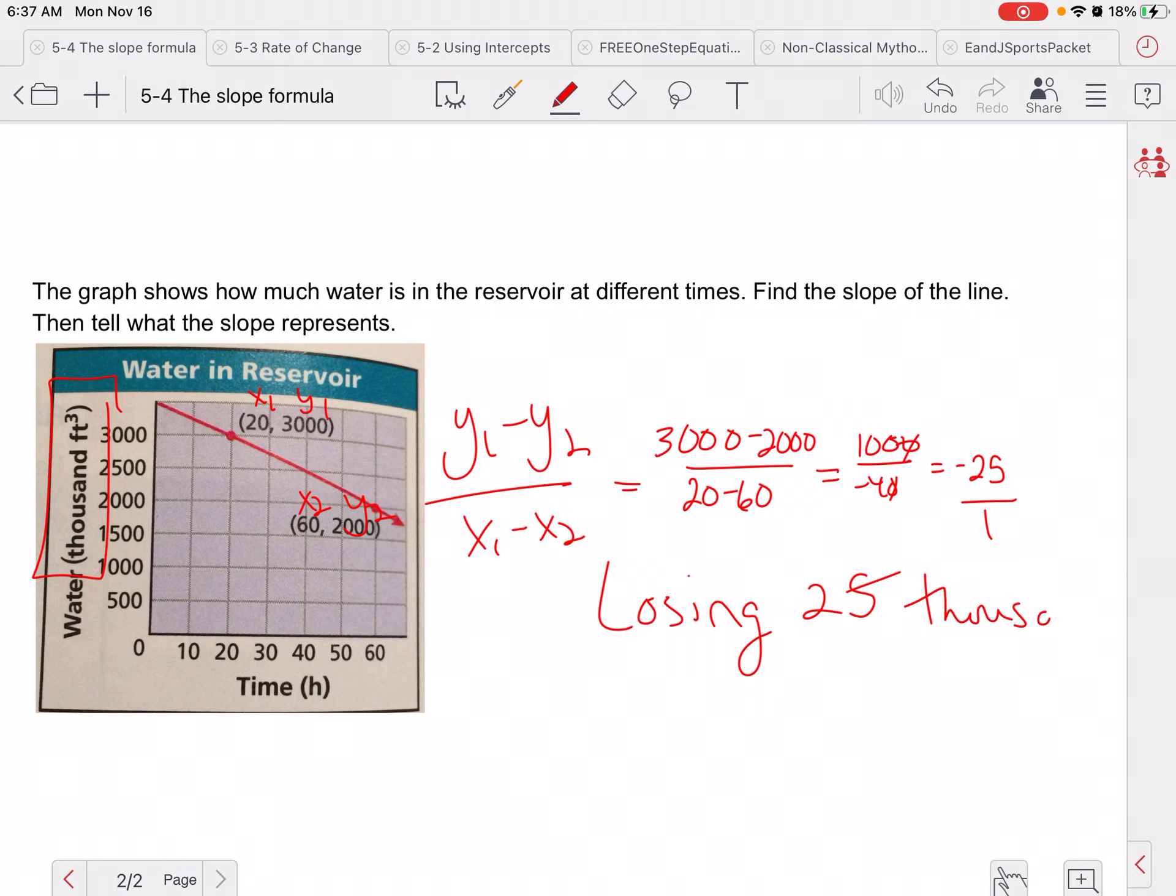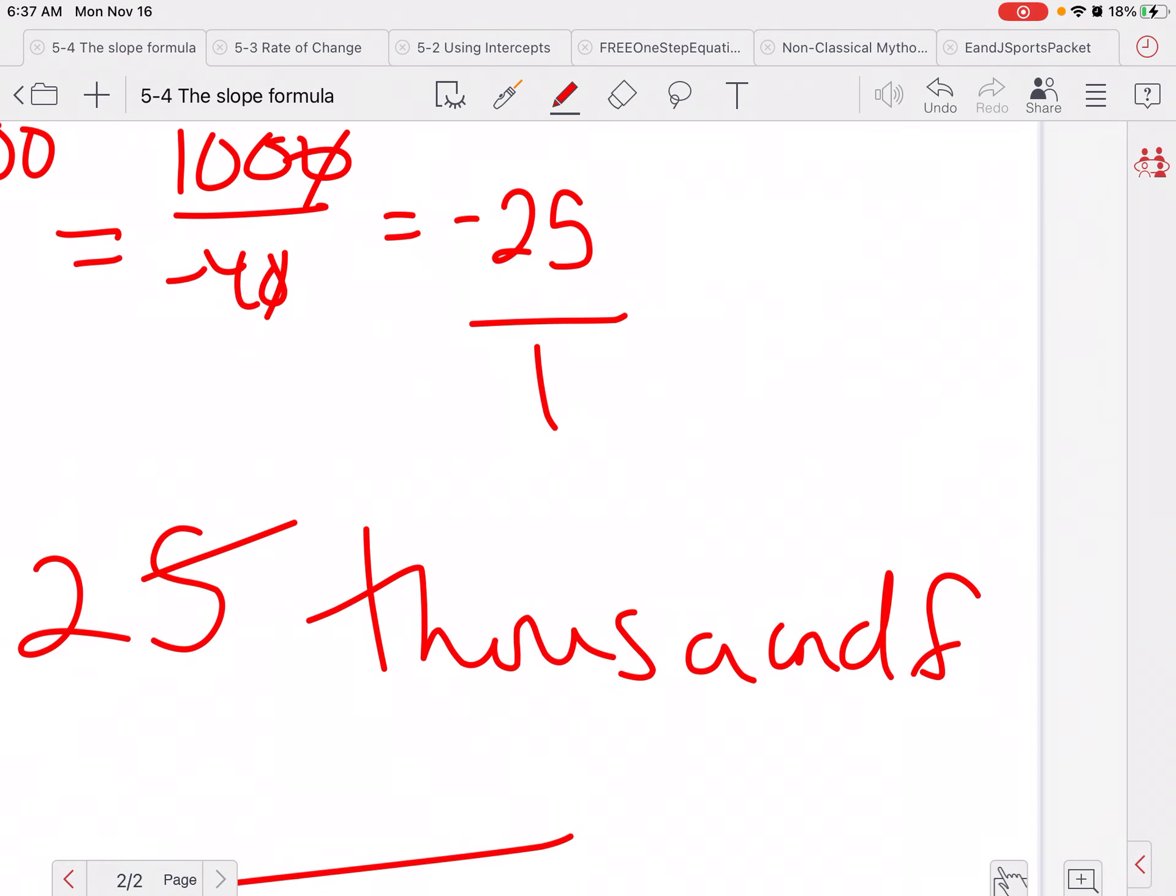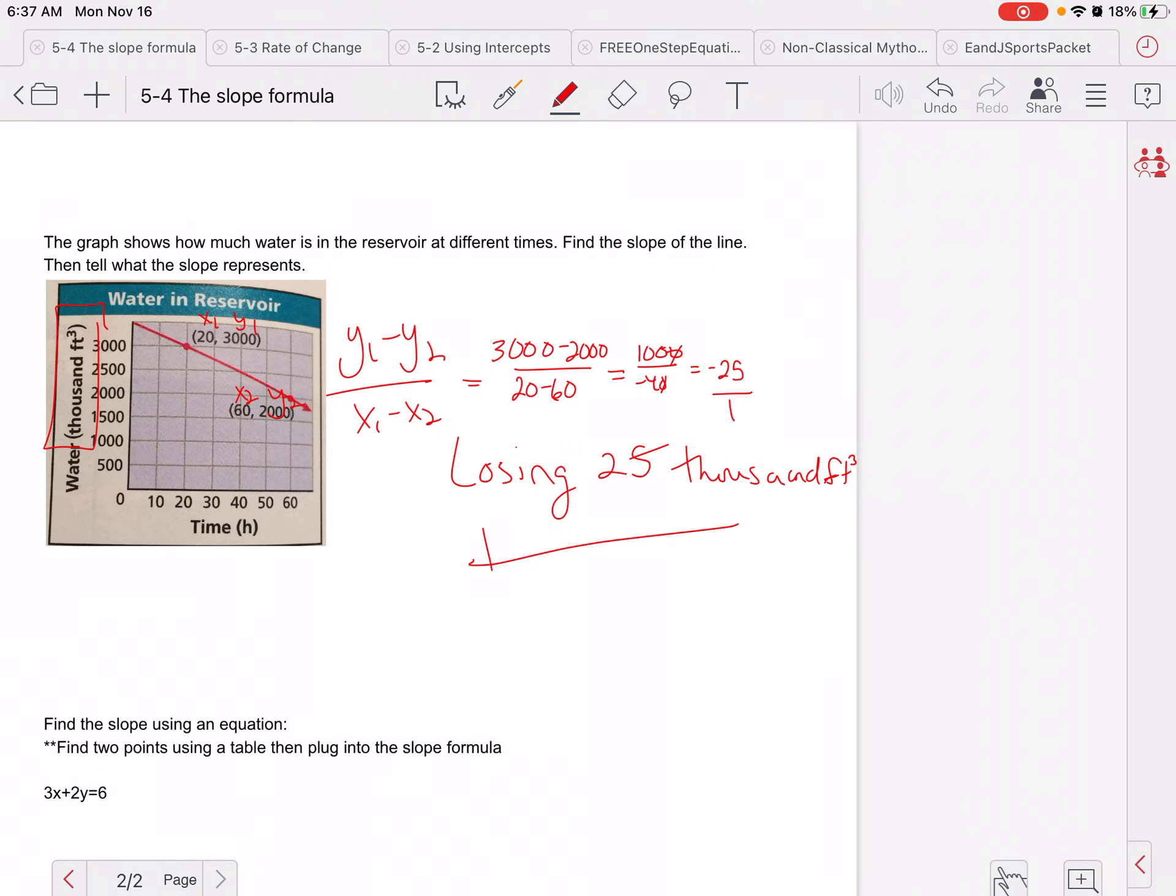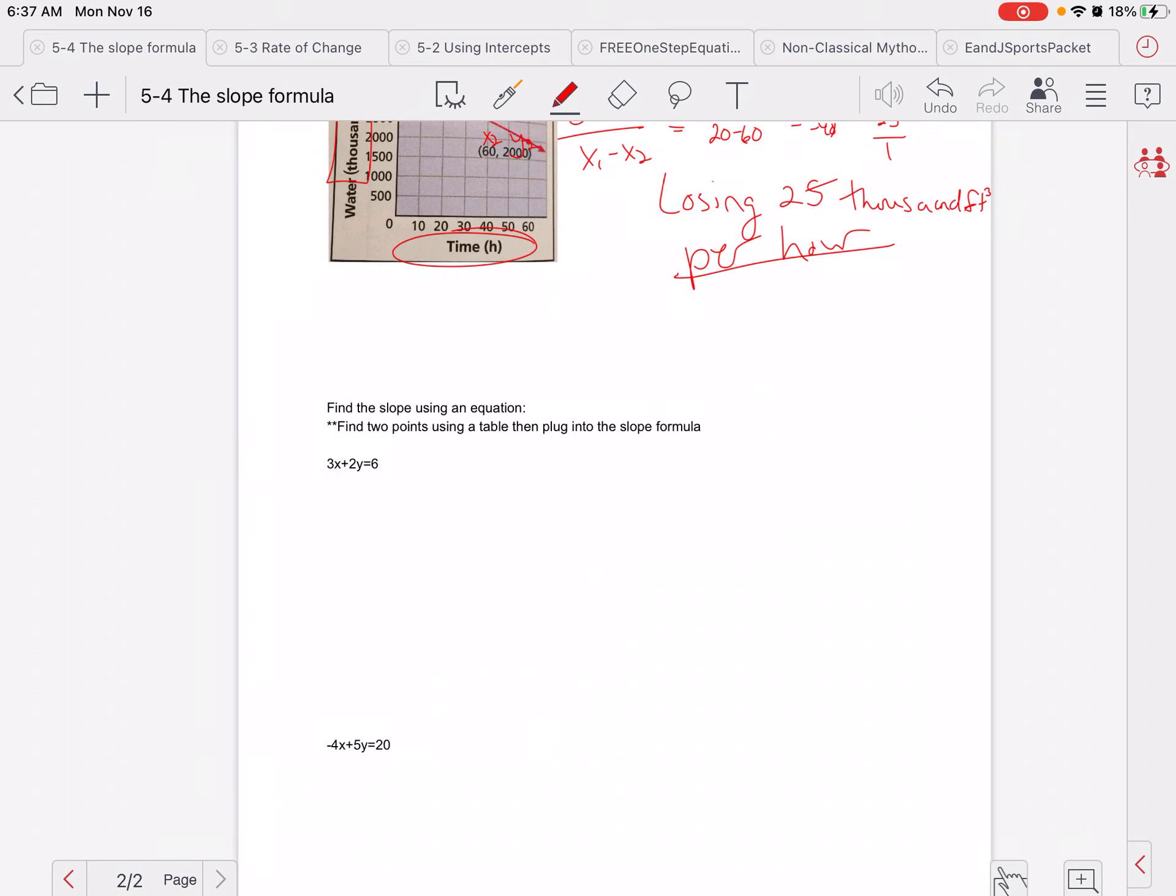So losing, because it's negative, 25, and so I looked at this unit to figure that out. So 1,000 feet cubed, sorry guys, per hour. So I got my two labels there and that's how I could tell what that slope actually meant. So we found slope from a graph, slope from a table.